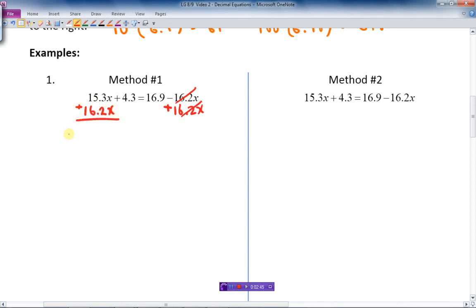So we can add those together and I get 31.5x plus 4.3 equals 16.9. Now, I've got to get rid of the extra terms on the left-hand side there. There's a plus 4.3, so we do the opposite. We minus 4.3, do it to both sides. So the 4.3 is gone now. That leaves me at 31.5x equals 12.6.